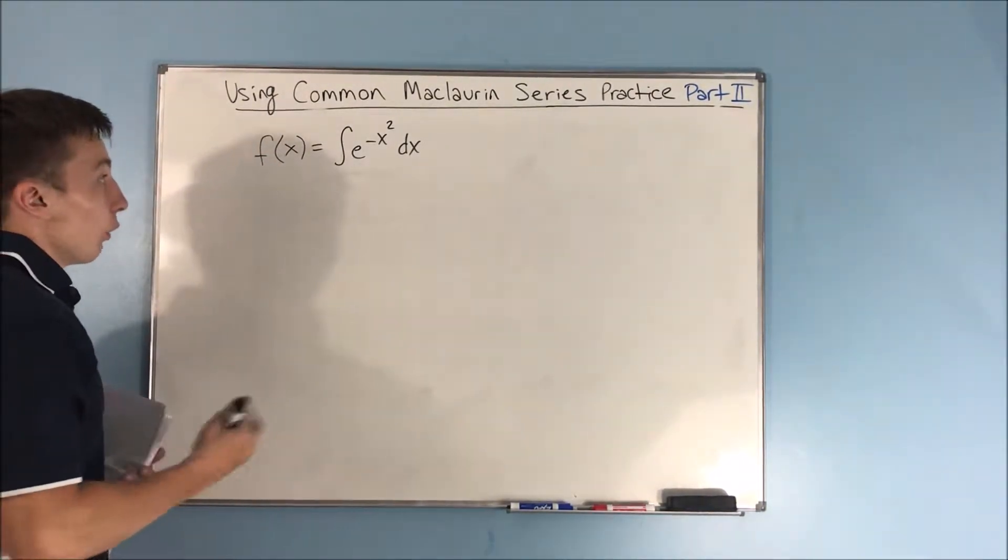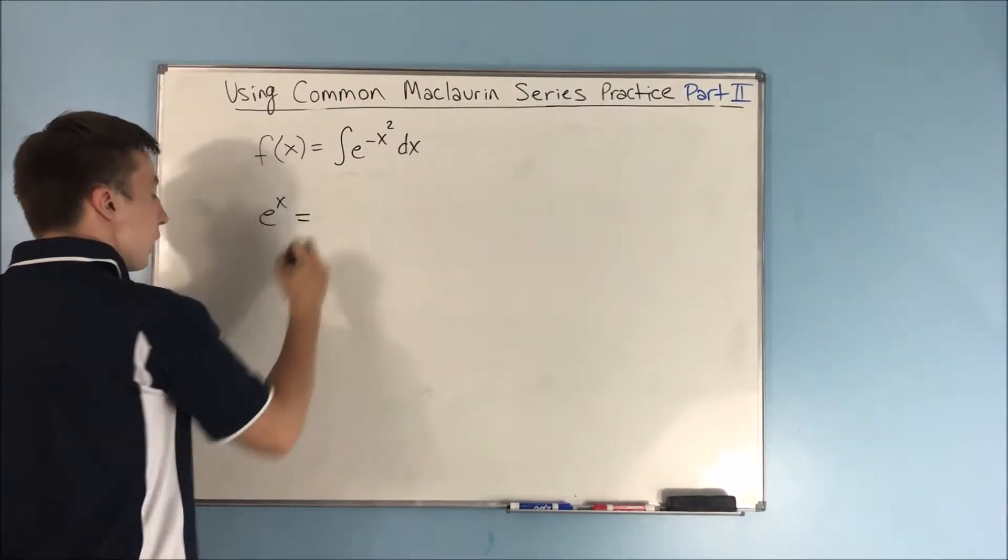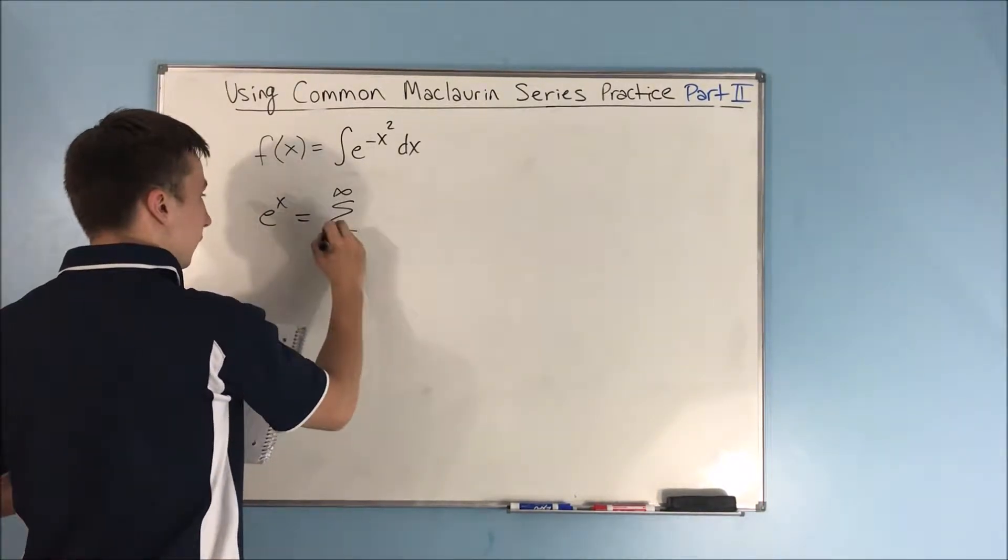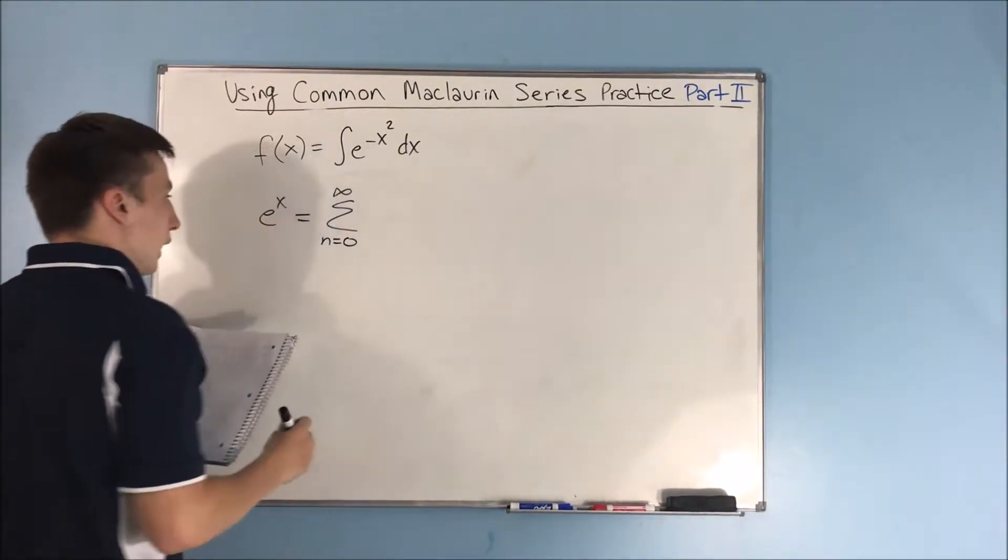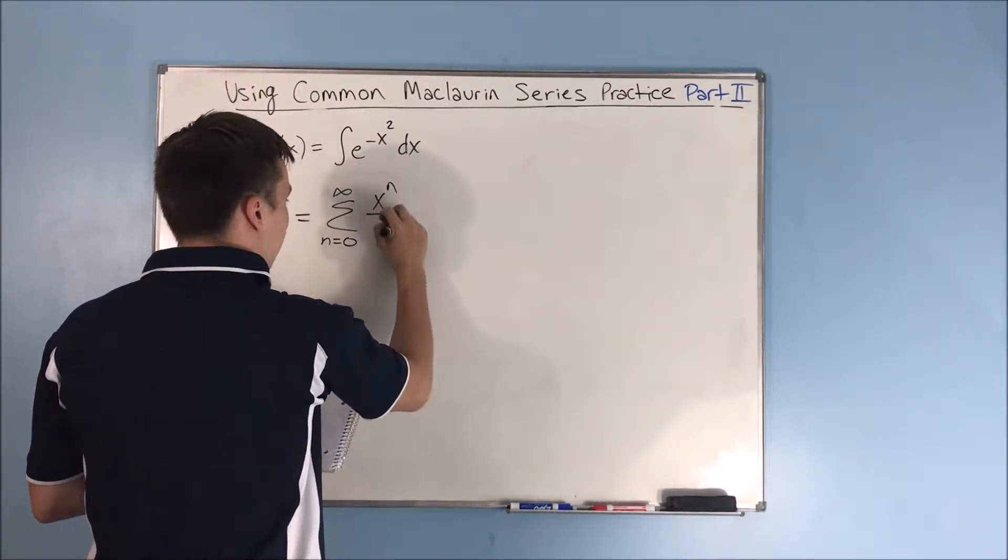Alright, so what we're going to do is start off with e to the x. We know that the Maclaurin series for e to the x is the sum from n equals 0 to infinity of x to the n over n factorial.